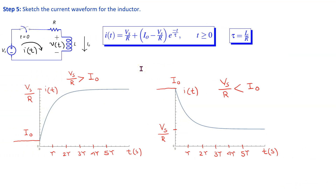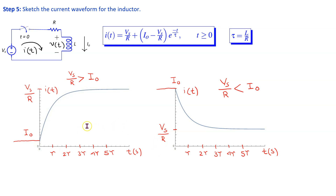The last step is to sketch the current waveform and understand the significance of the time constant. Depending on whether Vs/R is greater than or less than I0, we get two different waveform shapes. In the first case, the initial current I0 steadily increases until it reaches Vs/R. In the second case, the initial current I0 decreases until it reaches Vs/R. In both cases, the transient response lasts approximately 5 time constants, after which the circuit reaches steady state.